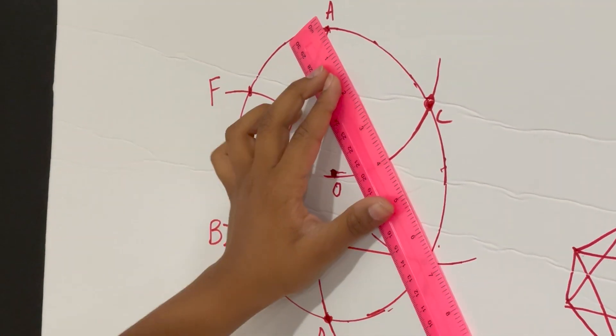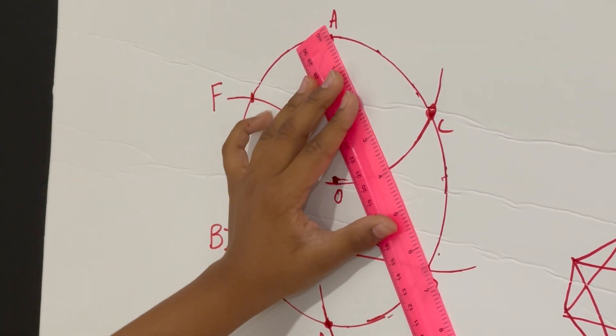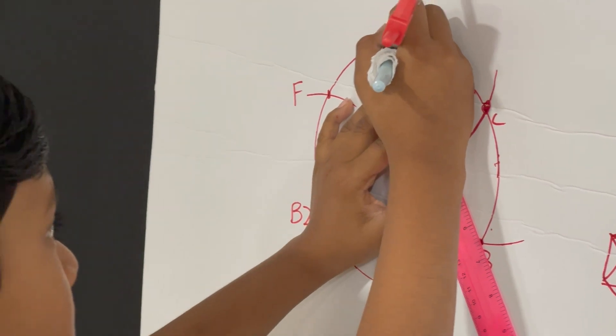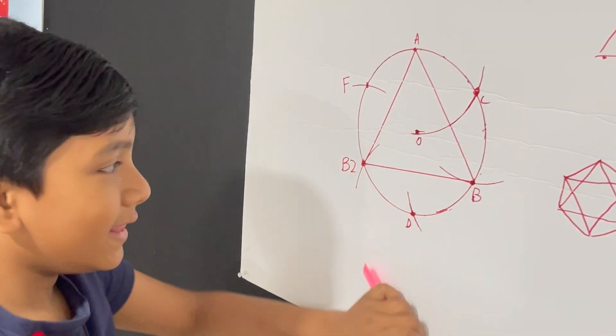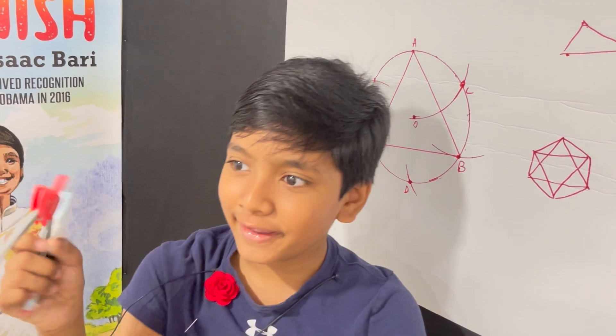And finally, let's connect A and B. And we've got this equilateral triangle. Bye. Thank you, everybody.